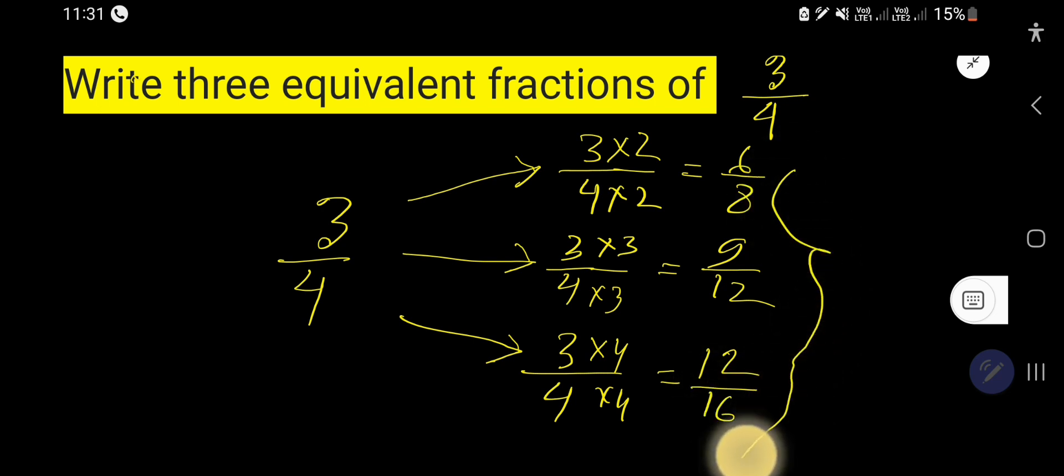6 over 8, 9 over 12, and 12 over 16 are the equivalent fractions of 3 over 4.